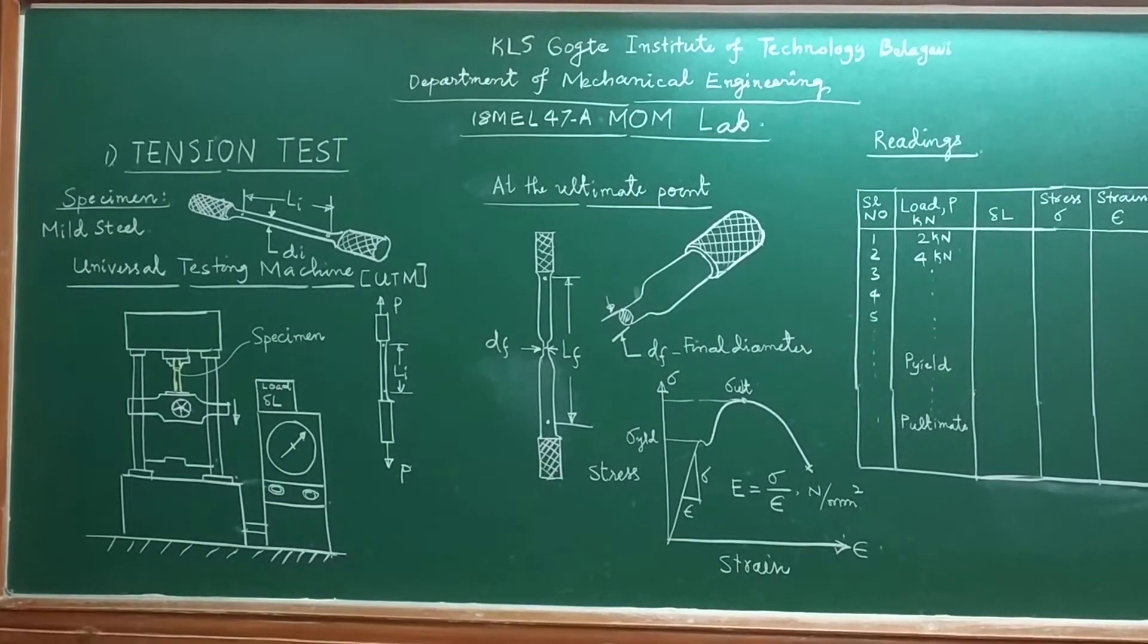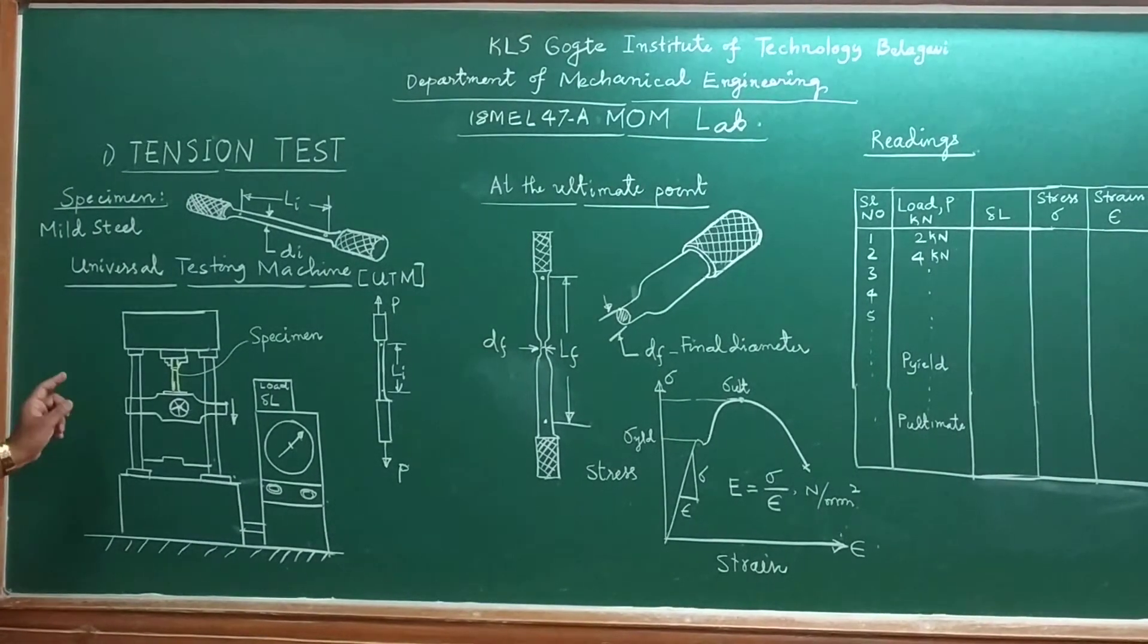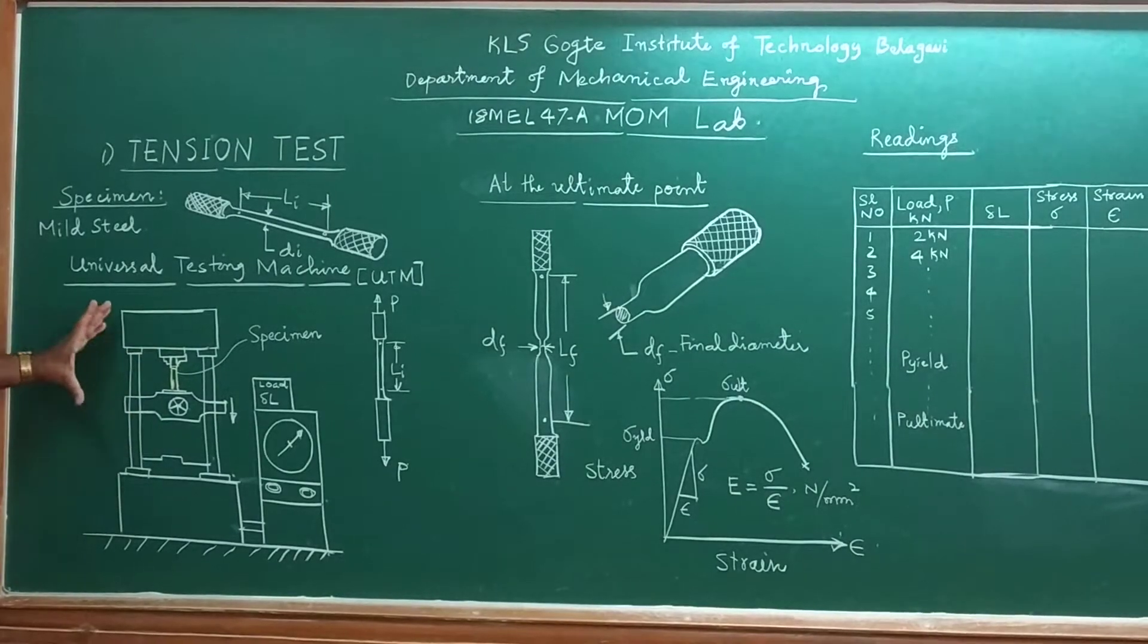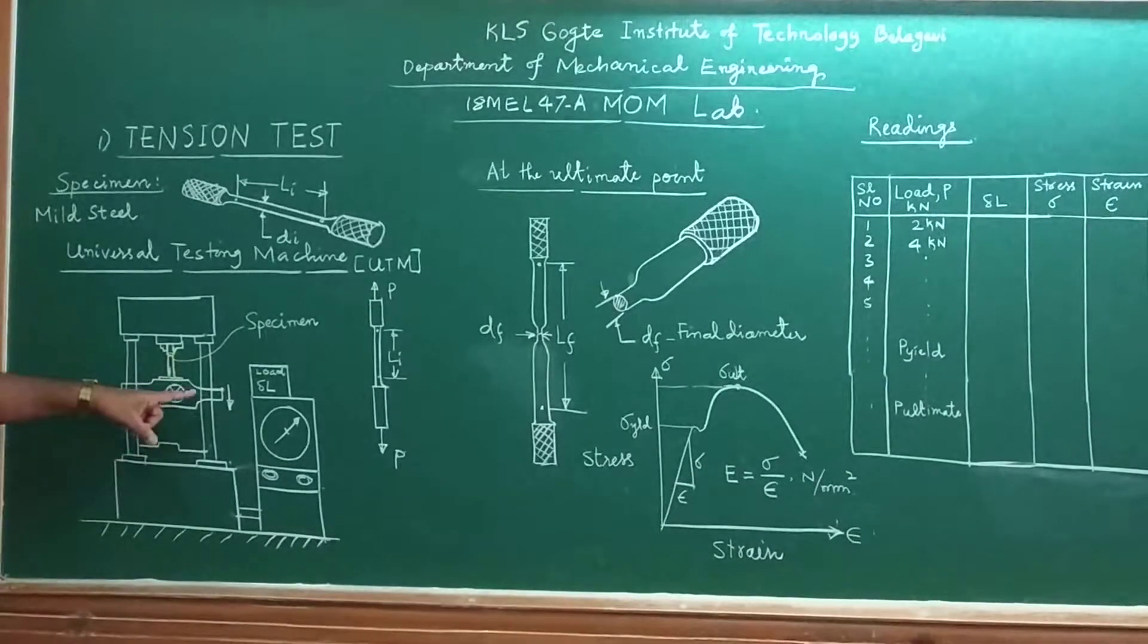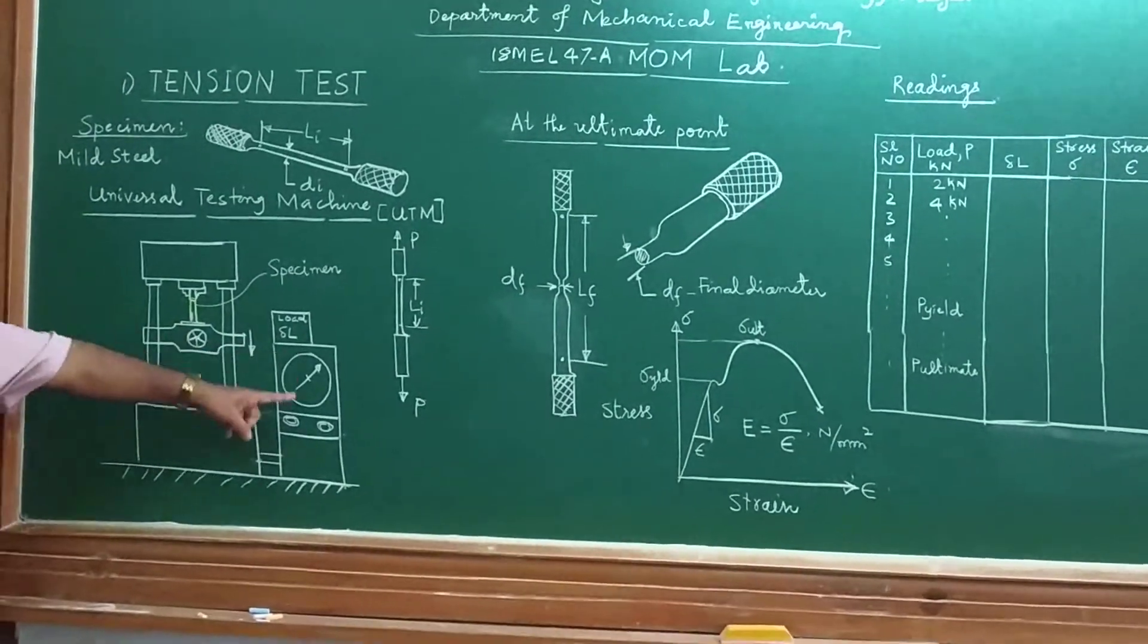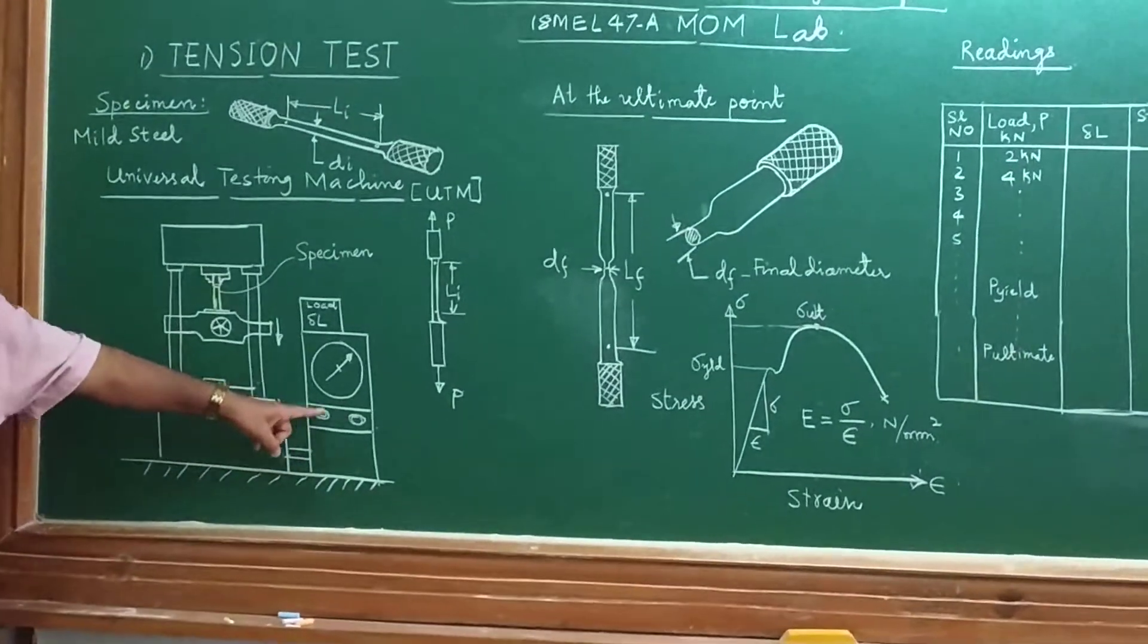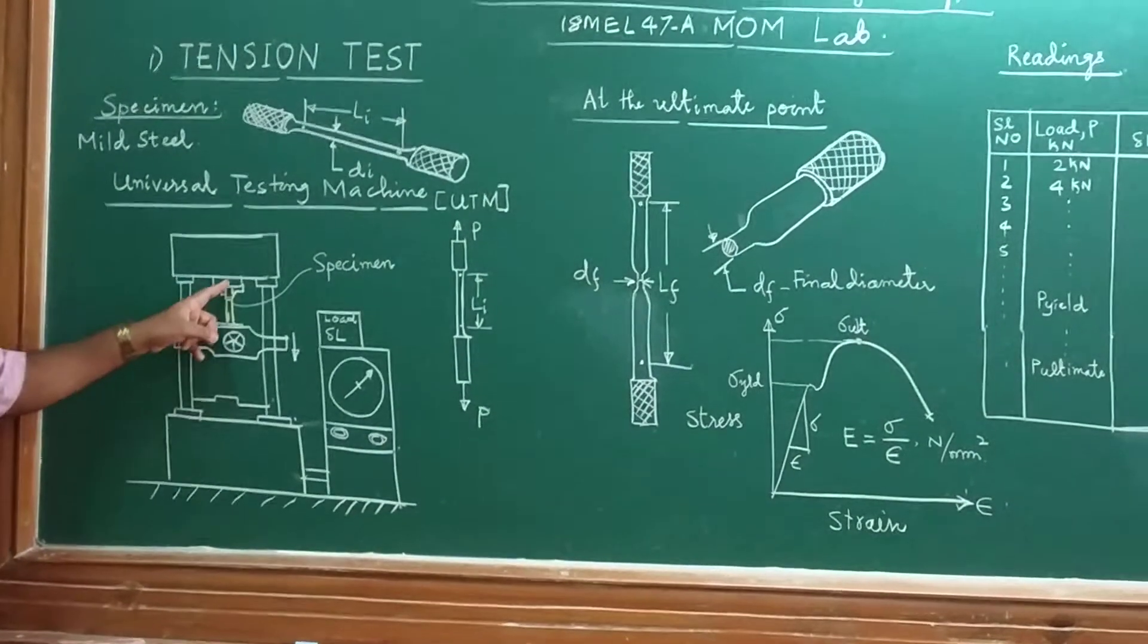Here we have the equipment called Universal Testing Machine. The top frame is fixed and the bottom frame is moved with the help of a hydraulic inlet. These two locks are used to control the amount of force on the specimen.